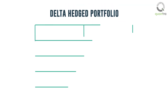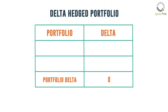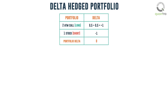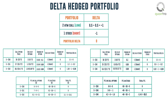As discussed in the previous video, we would create a Delta-hedged portfolio with long ATM call options and a short position in the underlying stock. If the underlying moves in either direction, the Delta-hedged portfolio would be profitable, since it is indifferent to changes in price. We had seen this in the previous video.